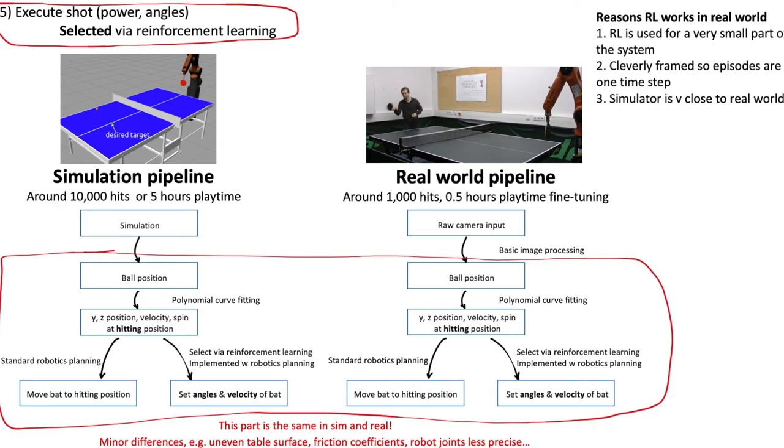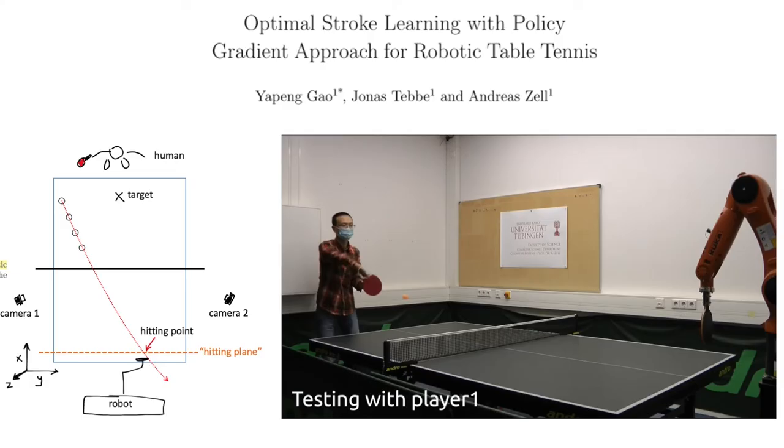To summarize, I think there are three things that make RL work in the real world here. Firstly, RL is only a small part of the system. They're not trying to learn from pixels all the way to joint movements. Secondly, they've removed the sequential aspect of RL. This avoids any challenges around sparse rewards or exploring the environment thoroughly. And then lastly, the simulator pipeline is very close to that in the real world. So that's my overview of this project.